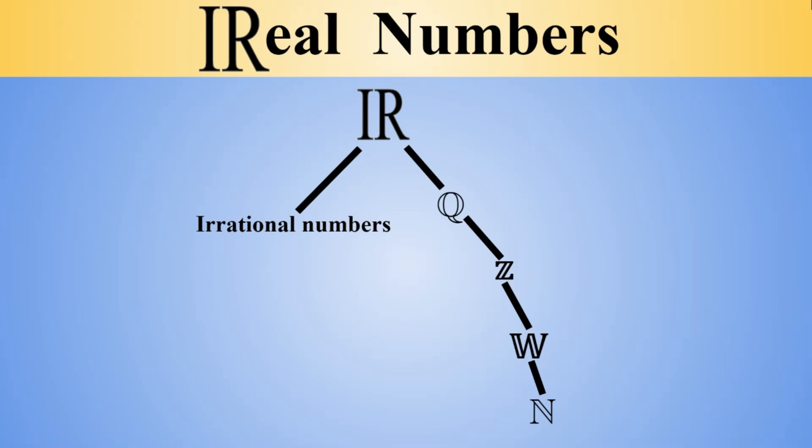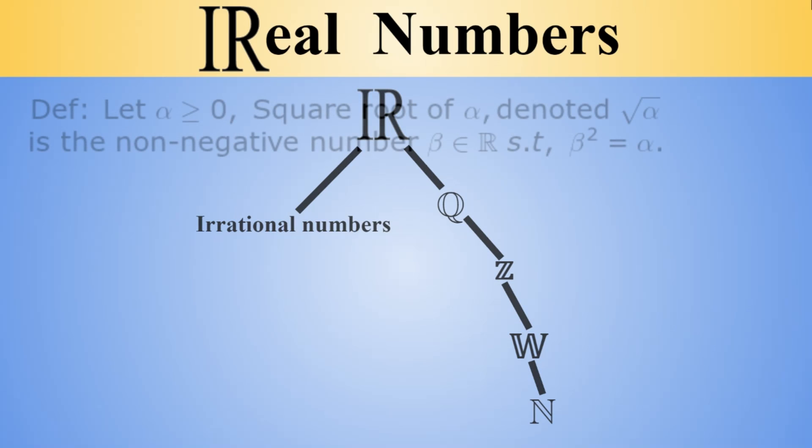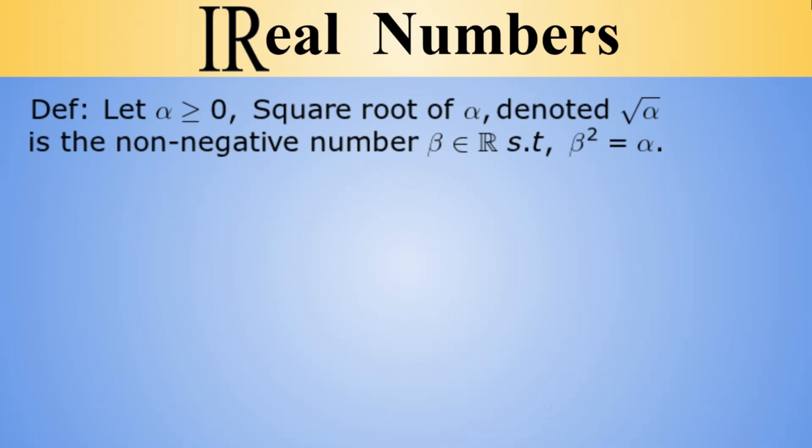One thing that comes up often and you already saw, is the square root. It is kind of hard to talk about real numbers and not really talking about the square roots. So I just want to remind you what a square root is. First, let us define this. We are going to define the square root for α to be any non-negative real number β, so it can be 0, but it should be non-negative, such that β² is equal to α. And I wanted to define these things formally.